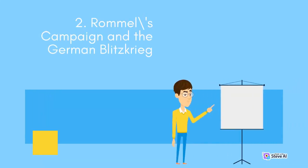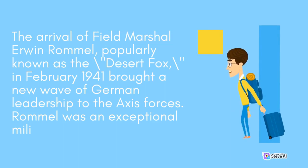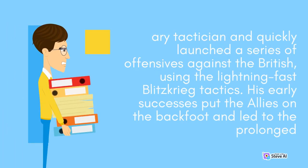Rommel's Campaign and the German Blitzkrieg: the arrival of Field Marshal Erwin Rommel, popularly known as the Desert Fox, in February 1941 brought a new wave of German leadership to the Axis forces. Rommel was an exceptional military tactician and quickly launched a series of offensives against the British, using the lightning-fast blitzkrieg tactics. His early successes put the Allies on the back foot and led to a prolonged struggle.